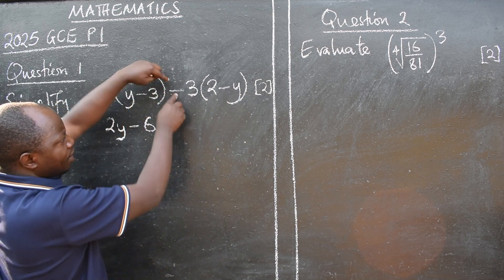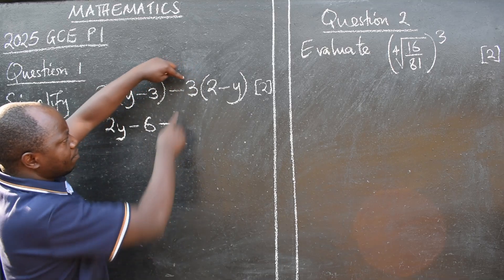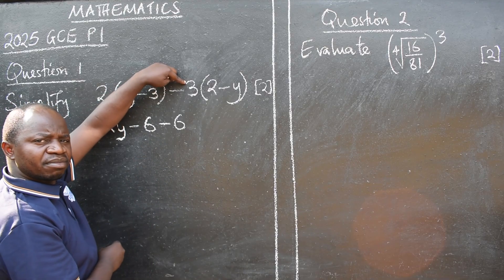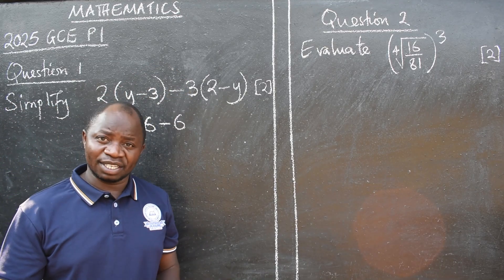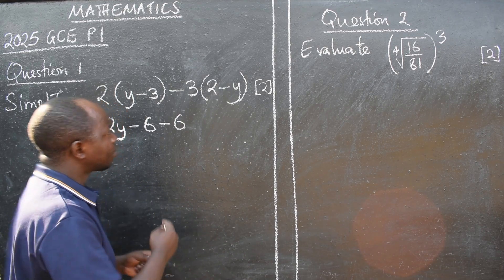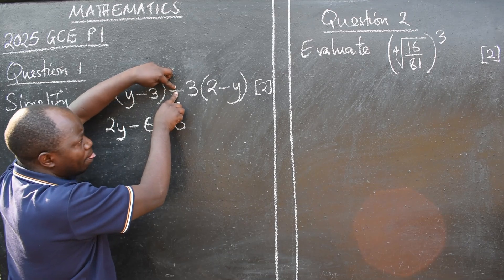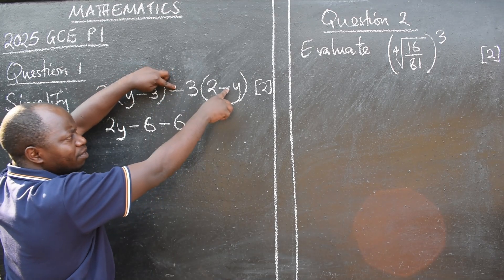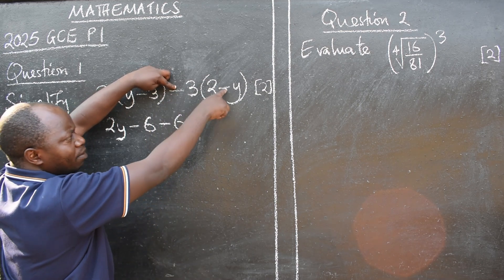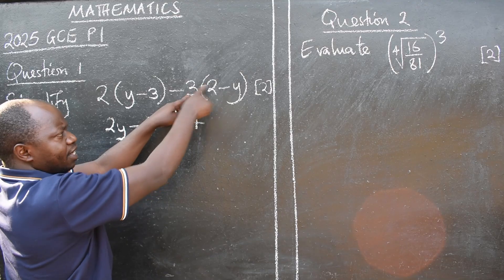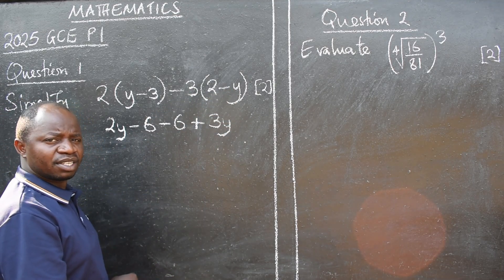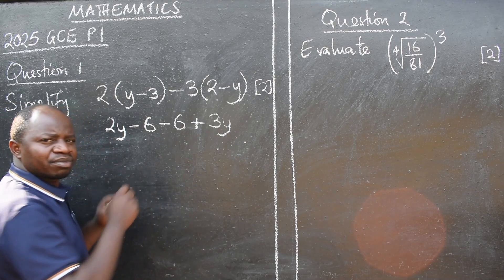On the other side there is minus. Do the same. Three times two, six. In paper one, we do not allow calculators. Remember that. So as you are doing the calculations here, be accurate. Then this negative, or minus, times minus, it will change to positive. So minus times minus is positive. Then three times y, three y. I see that. Brackets are gone. What next?